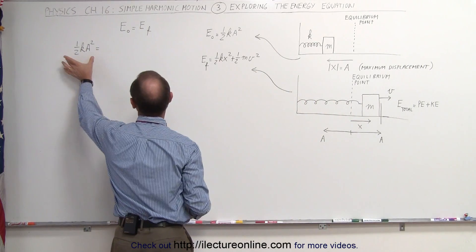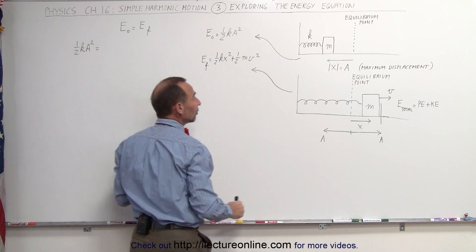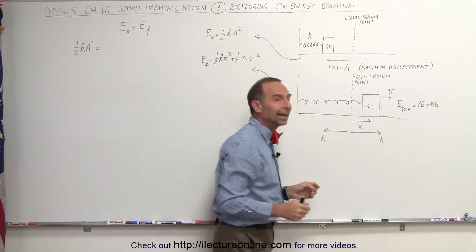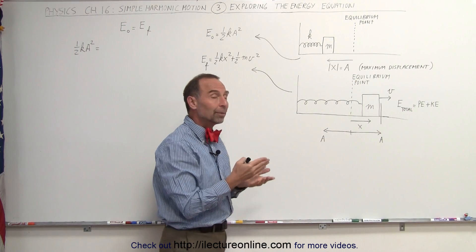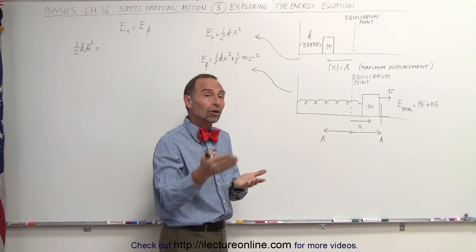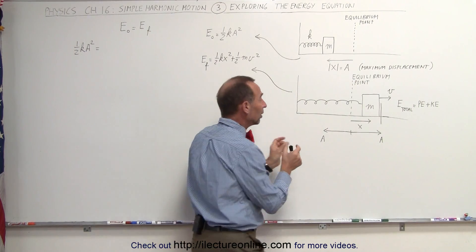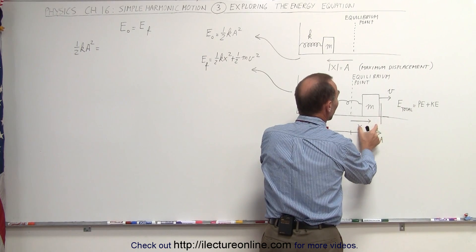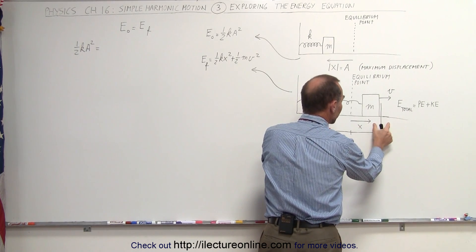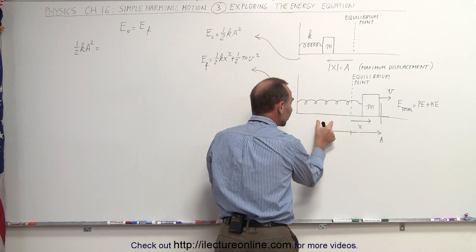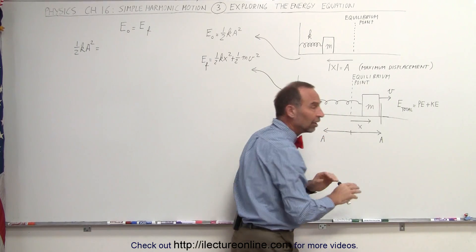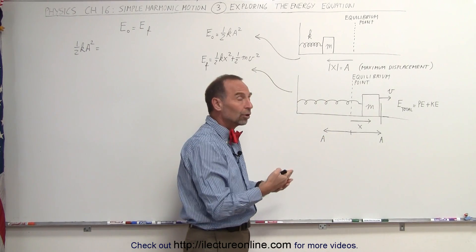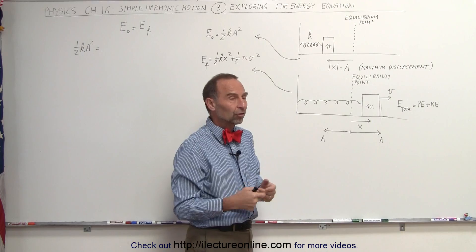That means all of the initial energy will then be stored completely in the kinetic energy of the block. In any other position, it will be a combination of kinetic energy and potential energy, until the block reaches the far point of its path. When it reaches the maximum amplitude on the right side or the maximum amplitude on the left side, there's no kinetic energy — all the energy will be stored in terms of potential energy.